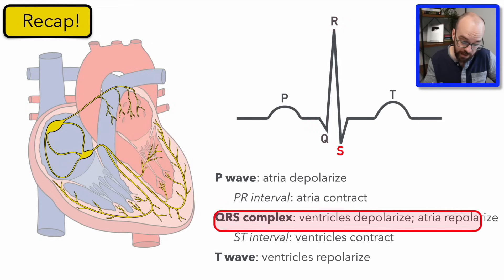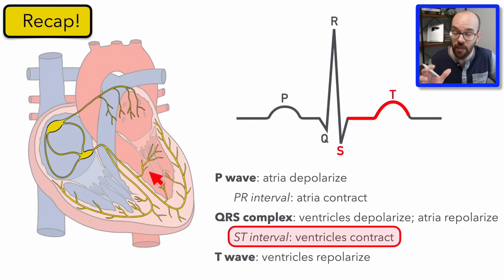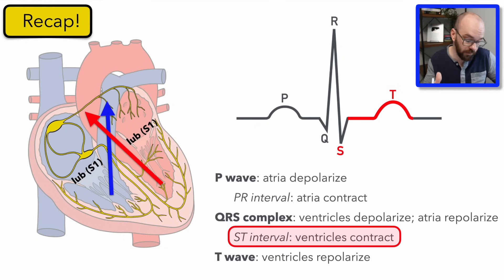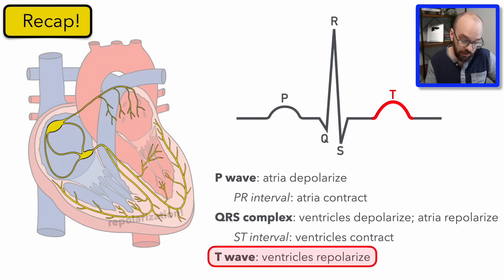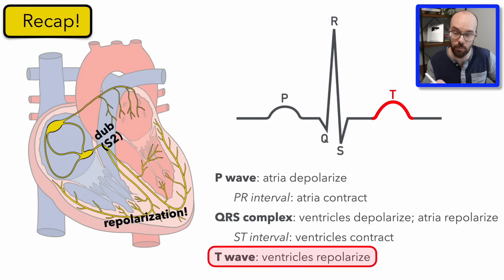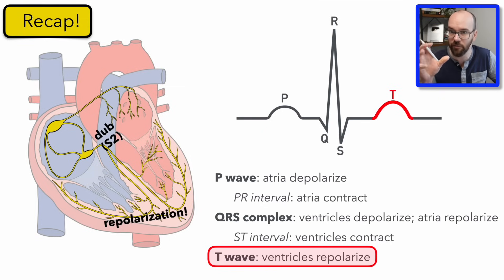Once the ventricles are depolarized, we enter the ST interval, where they contract and drive blood through the aorta and pulmonary artery. At the beginning of the ST interval is the first heart sound, S1, caused by the tricuspid and mitral valves snapping shut. The T wave is ventricular repolarization — stopping the contraction. As the ventricles relax, we have the second heart sound, S2, caused by the aortic and pulmonary semilunar valves snapping shut.